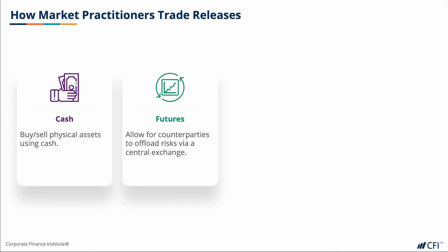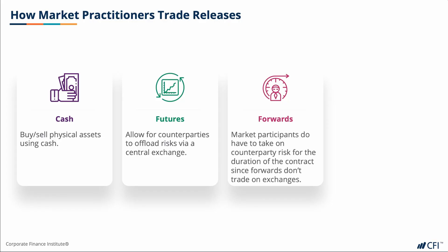Having said that, futures do provide leverage for traders. The third type of investment product would be forward contracts. They're more bespoke and they don't trade on exchanges, so market participants do have to take on counterparty risk for the duration of the contract. However, they also have a way of putting on trades before important economic events if the trader believes that the market has not priced in what she feels is the most probable outcome, by buying or selling a forward for a date beyond the economic event in question. The last example, but definitely not exhaustive, would be derivative-related trades.